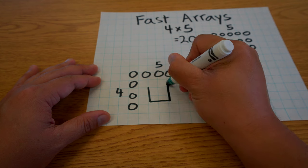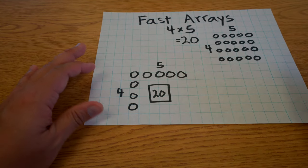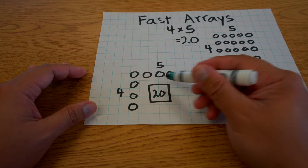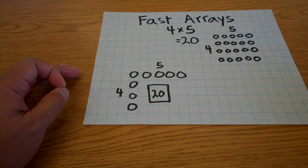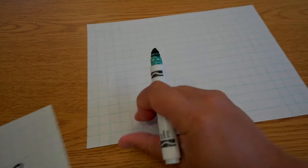Now you might see a box in here with the number 20. And what that means is that there are supposed to be 20 circles within this array. Okay, so let's try one more fast array here.